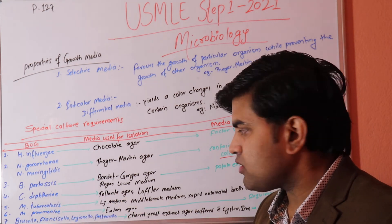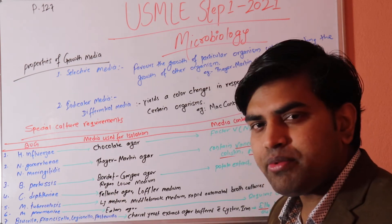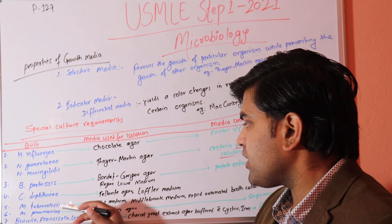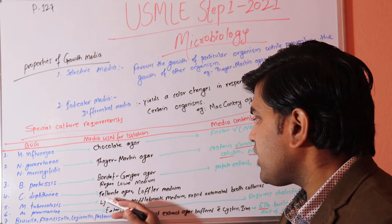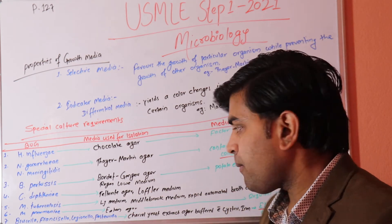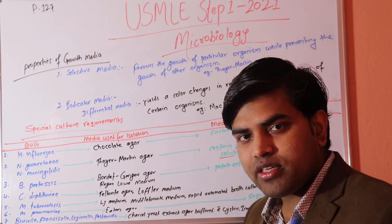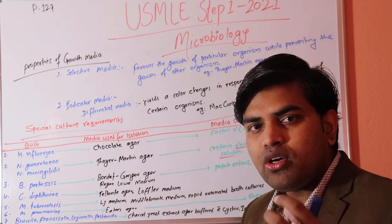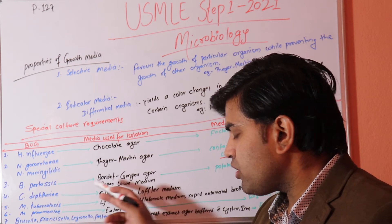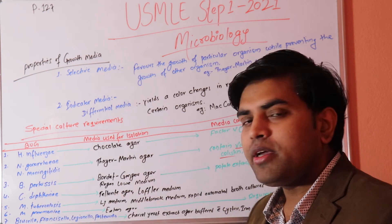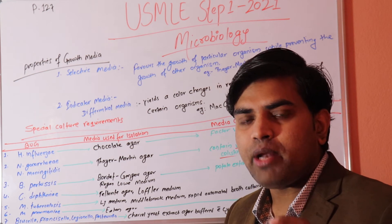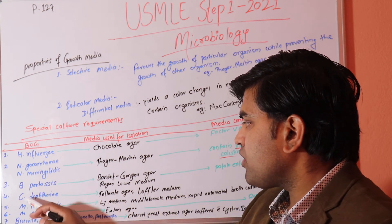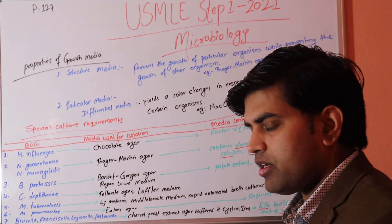Corynebacterium diphtheriae is one of the deadliest organisms. It is grown on tellurite blood agar and Löffler's medium. Tellurite blood agar turns the Corynebacterium diphtheriae colony black in color, which helps distinguish it from other organisms. Other organisms may also grow, but the Corynebacterium diphtheriae colony will be black, making it easy to identify and process further. Remember: tellurite blood agar or Löffler's serum slope for C. diphtheriae.